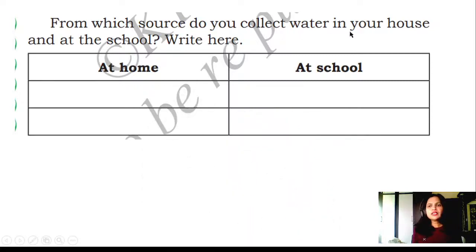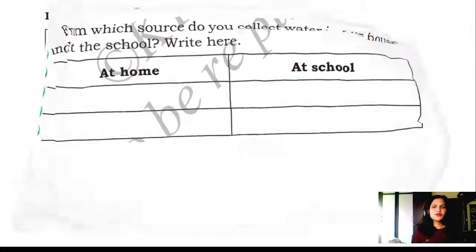From which source do you collect water in your house and at school? Write here. At home, where do you collect the water? In the water tank - water tank at the ground and above also one tank. Water will come from the tap. And from where will you get the water? At school - same, water tank will be there. Water will be coming from the rivers through the pipeline. You'll get water in the tap. These are the sources of water at school.